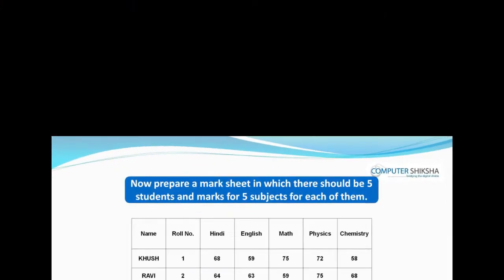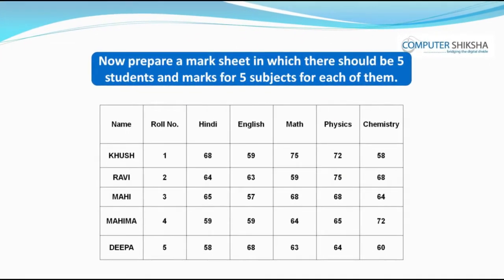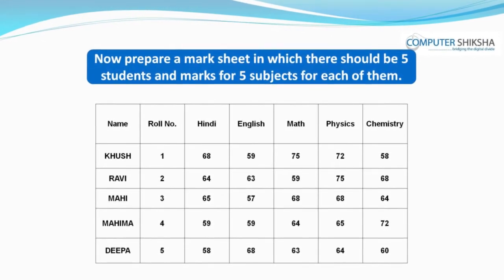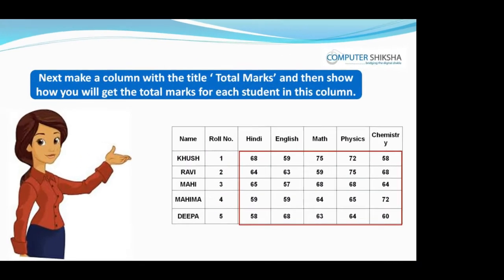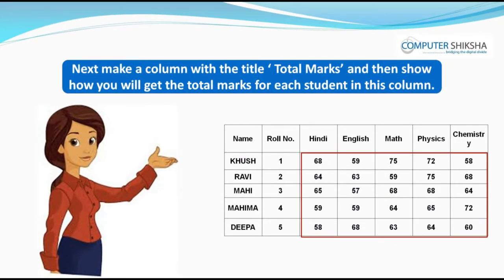Prepare a mark sheet in which there should be 5 students and marks for 5 subjects for all of them. Next, make a column with the title Total Marks and then show how you will get the total marks for each student in this column.